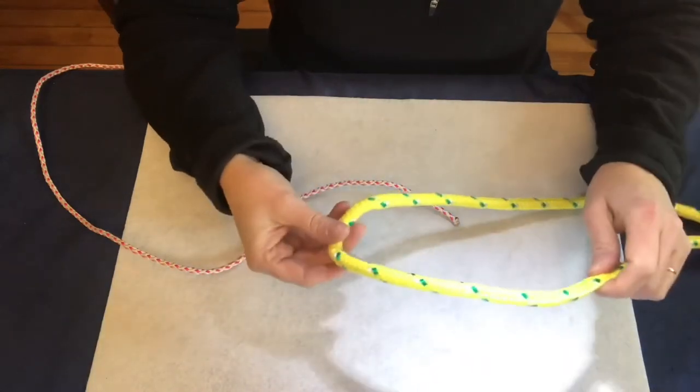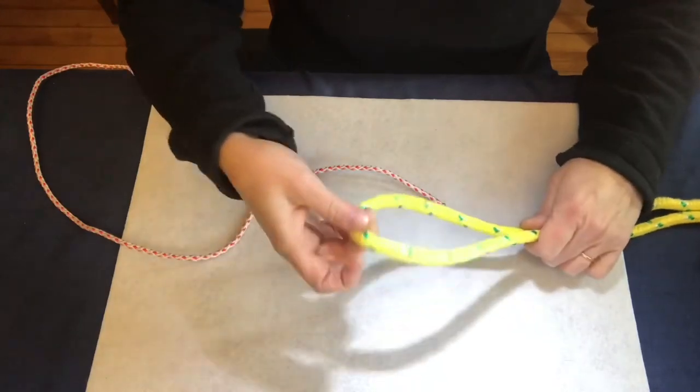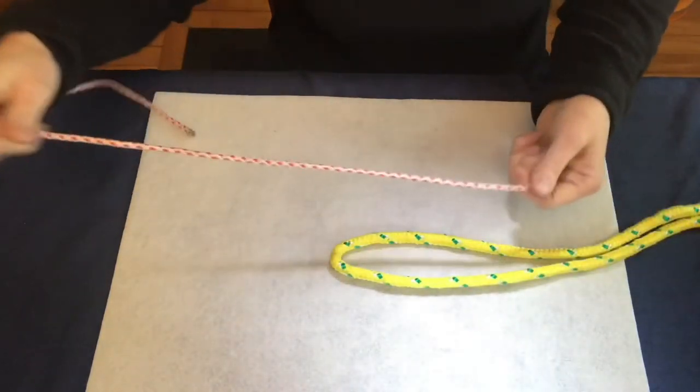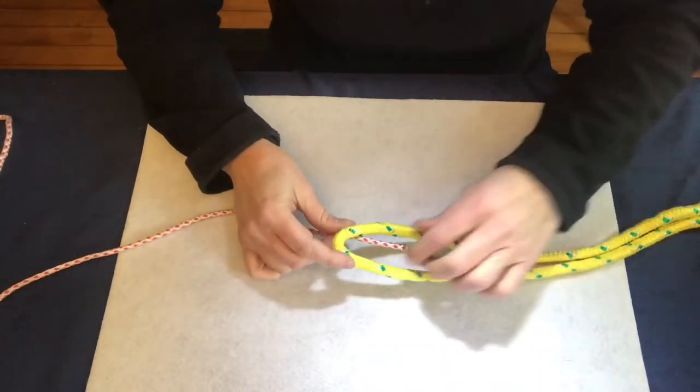So we're going to start with this thick rope and make a bight so it's got a bend right here, like a little loop.